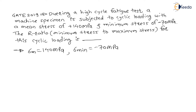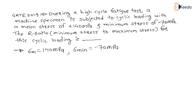Then, the R ratio — that is minimum stress to maximum stress for this cyclic loading — is what we need to find. It is a fill-in-the-blanks question where you have to type your answer as a number.